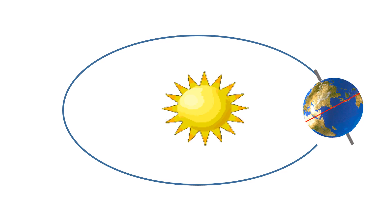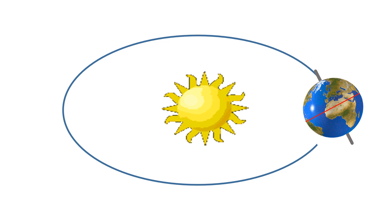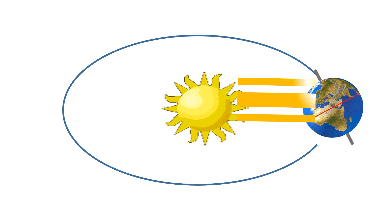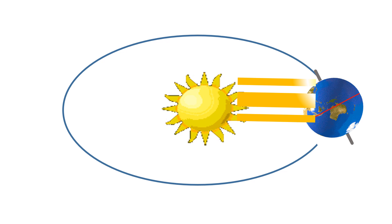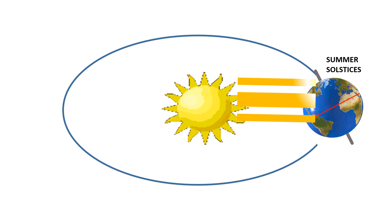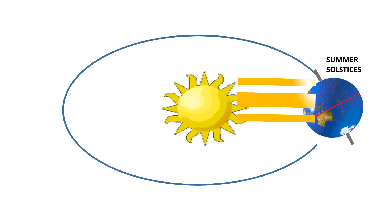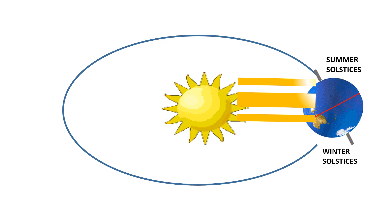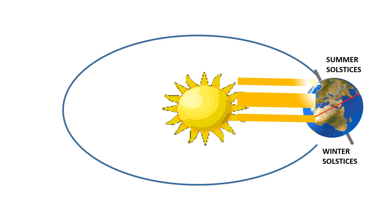When the northern hemisphere is most tilted towards the sun, it receives the most sunlight and experiences its summer solstice. This occurs around June 21st.